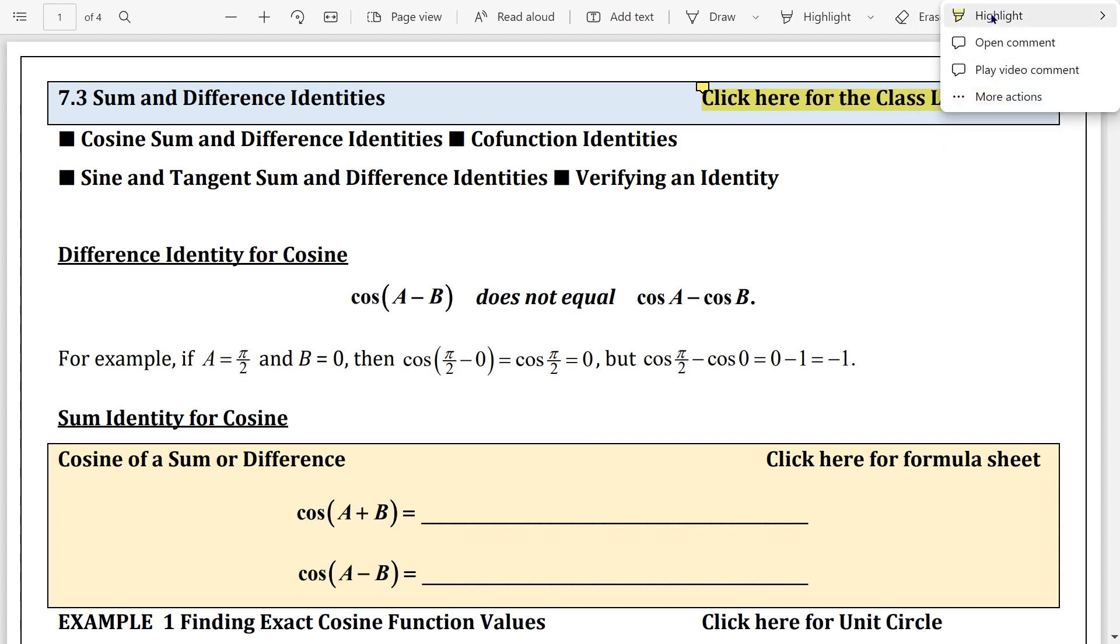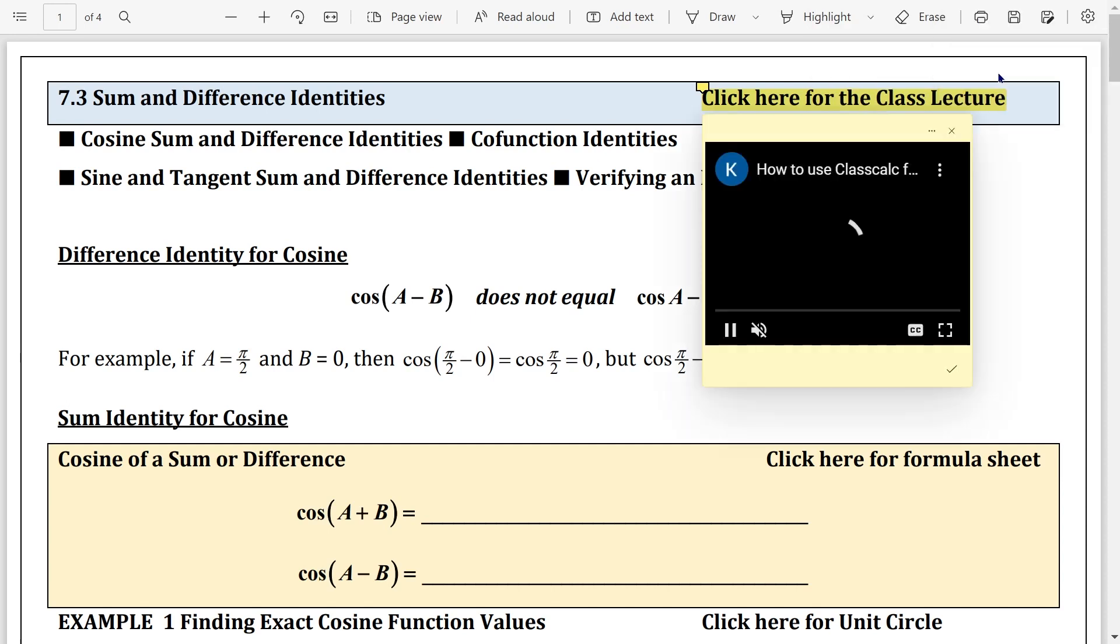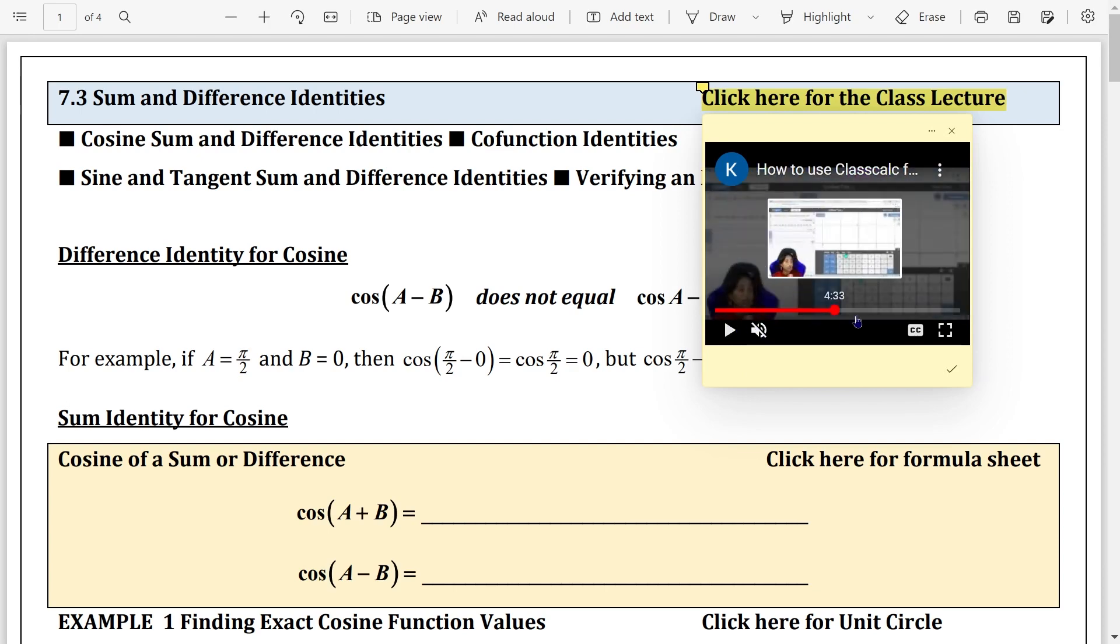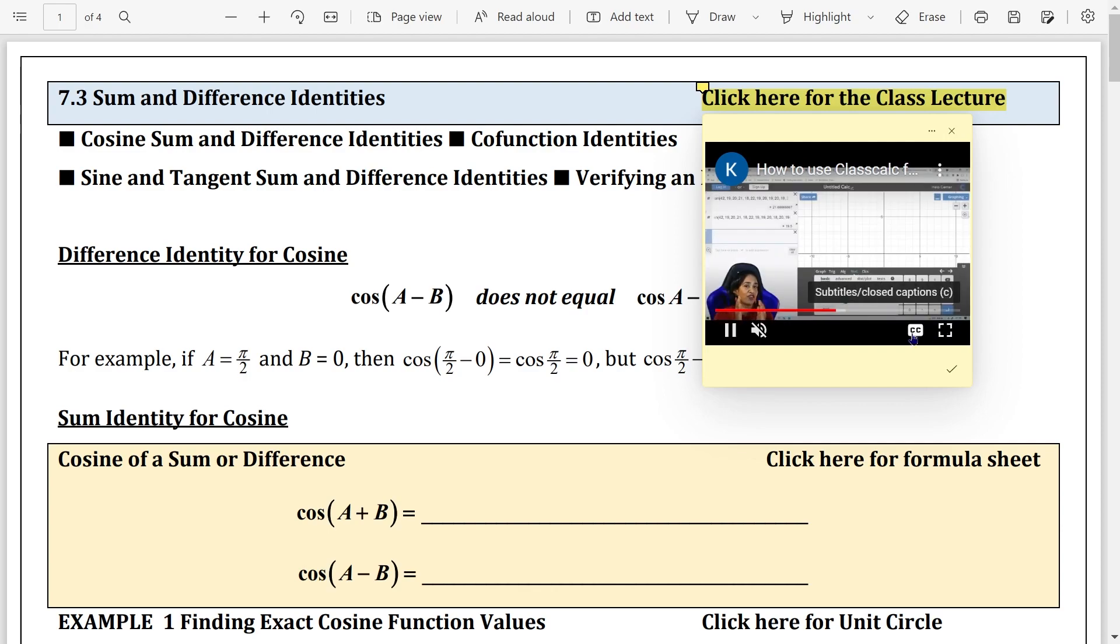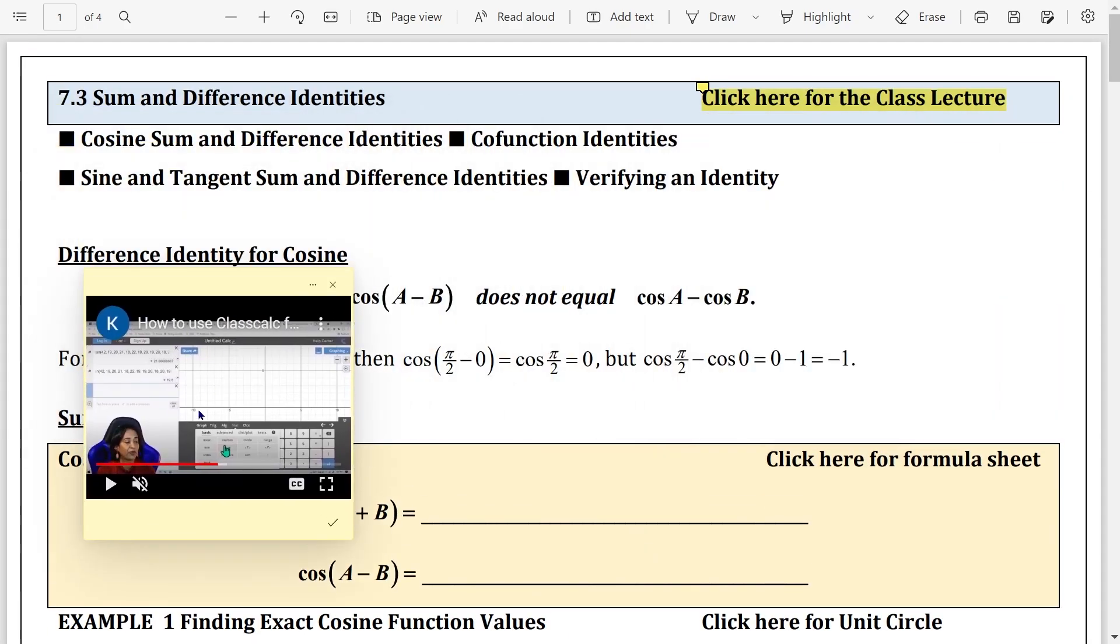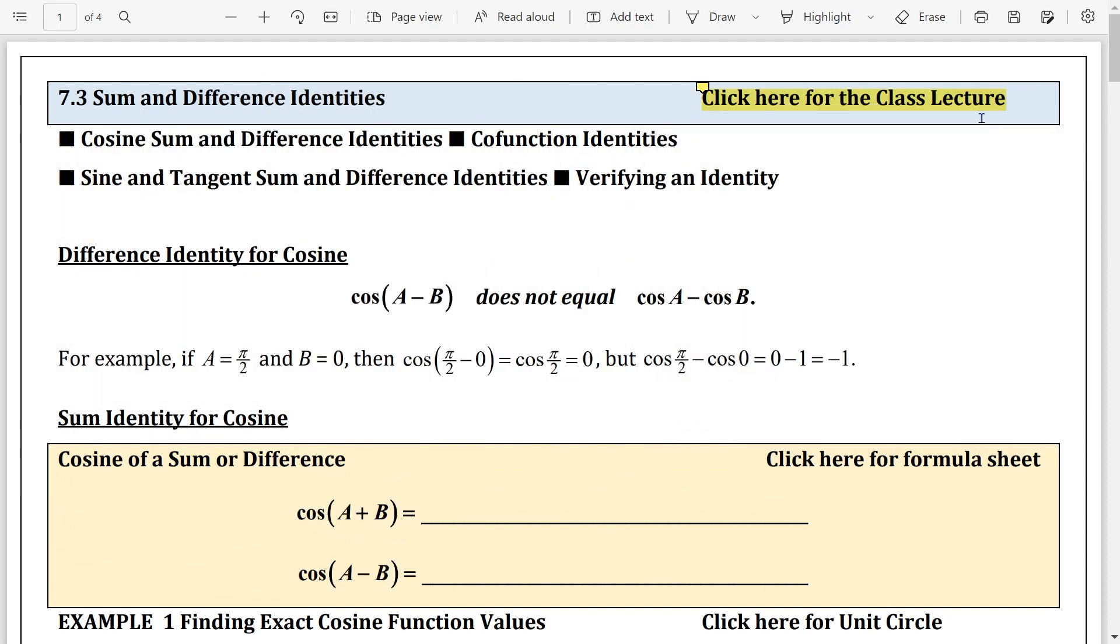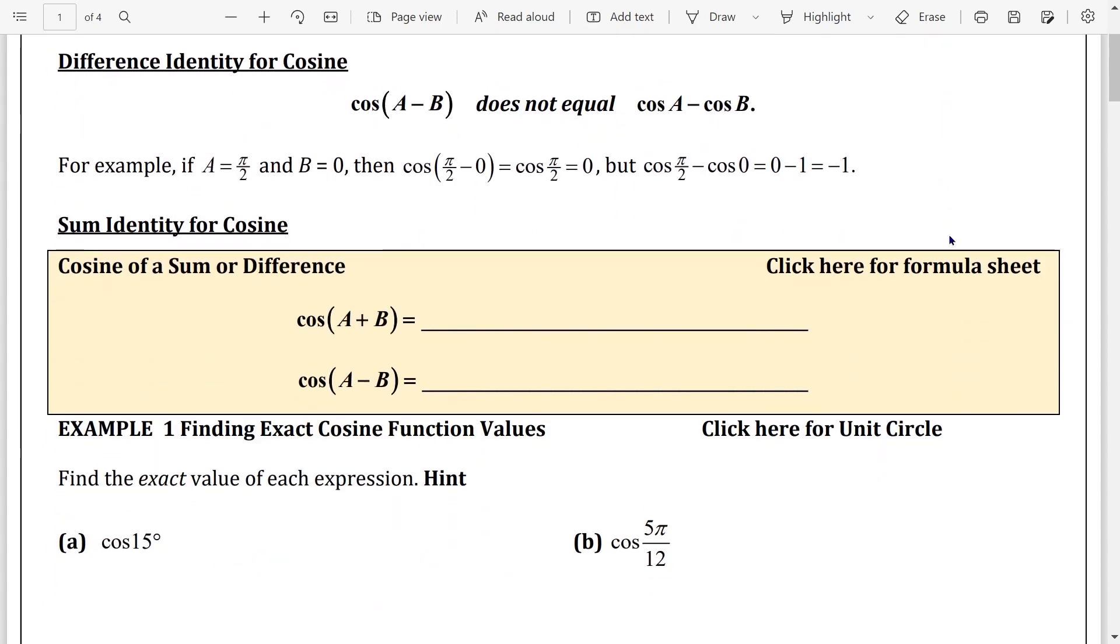So when you click on it, these options pop up, and let's go ahead and play the video comment. Amazing students, as you can see, the video is playing. My students can forward, backward, rewind. They can make it full screen, they can have closed caption, they can pause all while they're working on the document. They even have an option to move the video to any place on the screen. Once they're done, all they have to do is simply close it.